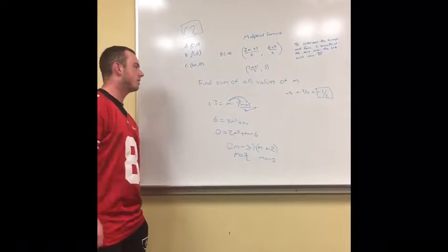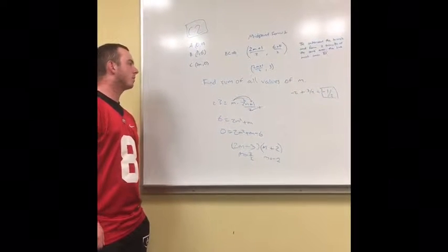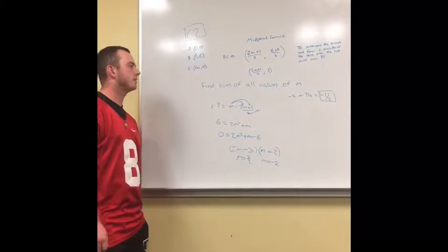And it also states that the line y equals mx plus b intersects that triangle at one point and gives you two triangles of the same area.